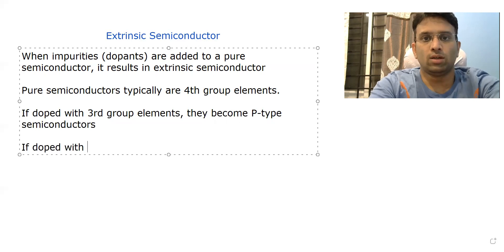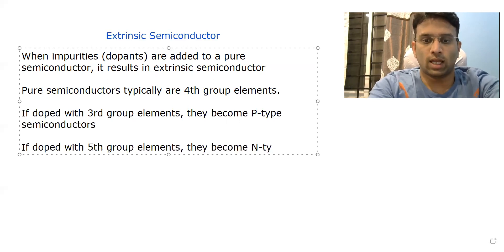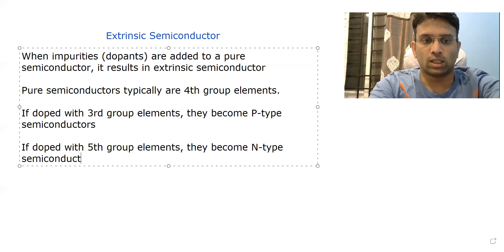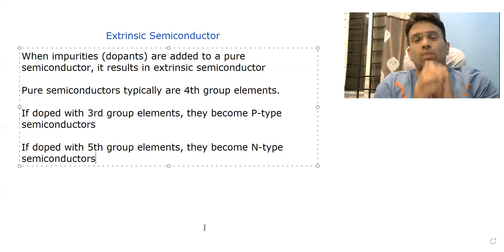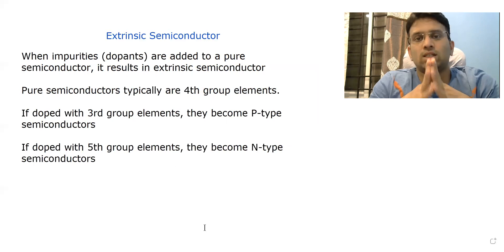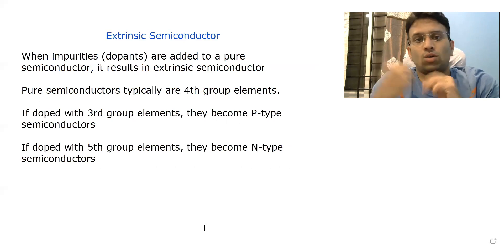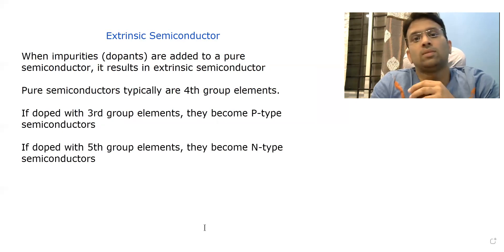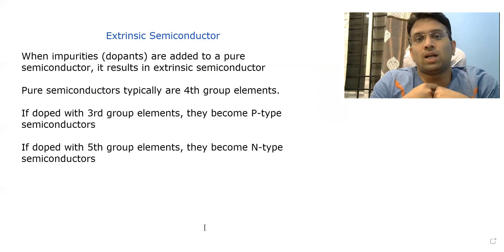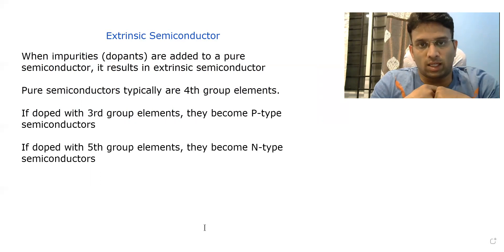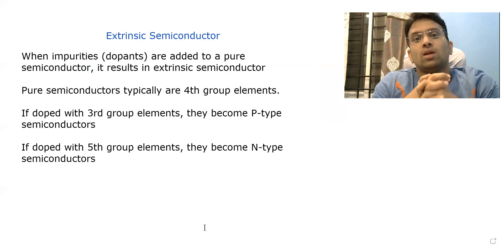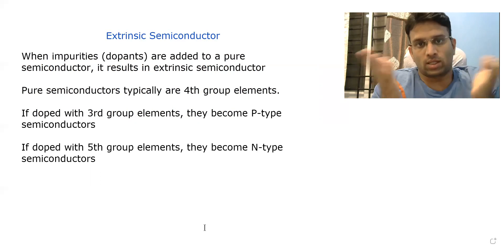And if doped with fifth group elements, they become n-type semiconductors. P-type semiconductors are basically intrinsic semiconductors doped with third group elements like aluminium. N-type semiconductors are extrinsic semiconductors which have fifth group elements as an impurity, like phosphorus.